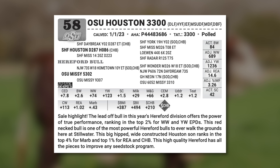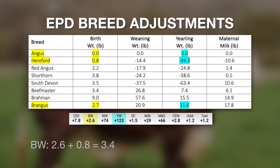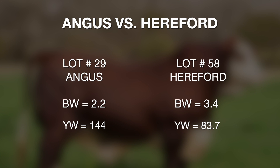Looking at our Lot 58 Hereford bull, his birth weight EPD is 2.6 and his yearling weight EPD is 123. The adjustment we pull from the chart is 0.8 pounds for birth weight, which effectively makes his adjusted birth weight EPD 3.4. For yearling weight, when we subtract 39.3, it effectively makes it 83.7. So those are the numbers we compare back to the Angus bull — the Angus at 144 yearling weight versus the Hereford at 83.7 means the Angus bull will sire calves about 60 pounds heavier.